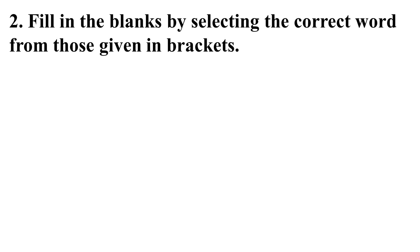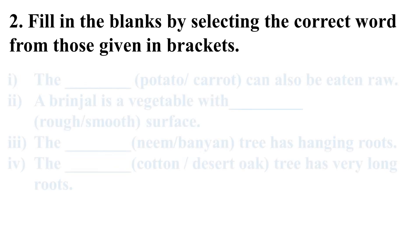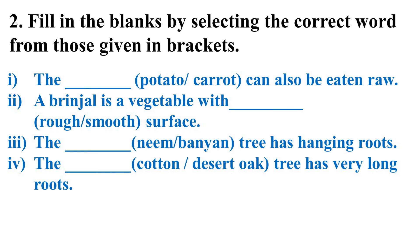Now fill in the blanks by selecting the correct word from those given in the brackets. First, the dash — potato or carrot — can also be eaten raw. Second, a brinjal is a vegetable with dash — rough or smooth — surface.